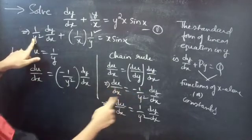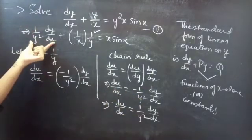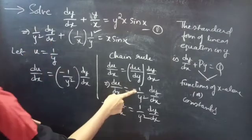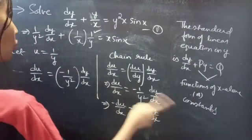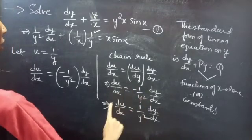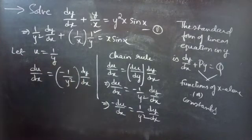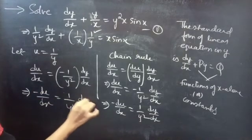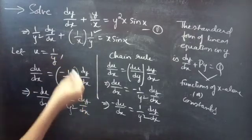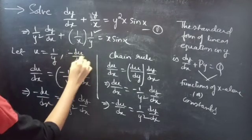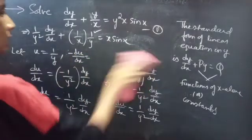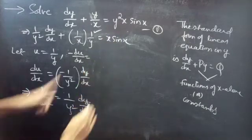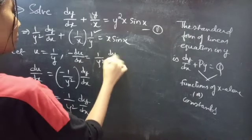We multiplied by minus because in our equation we have (1/y²)·(dy/dx), but from the substitution we have a minus sign. To eliminate that minus, we multiply through by −1, giving us: −du/dx = (1/y²)·(dy/dx).